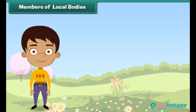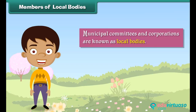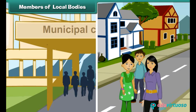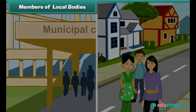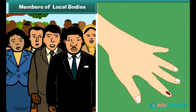Municipal committees and corporations are known as local bodies. Members of the municipal committee or corporation of a town or city are elected by the people of that town or city. All men and women who are 18 years of age or above are allowed to cast their votes in municipal elections.